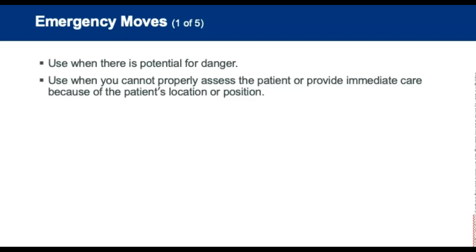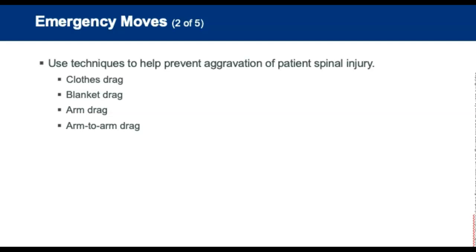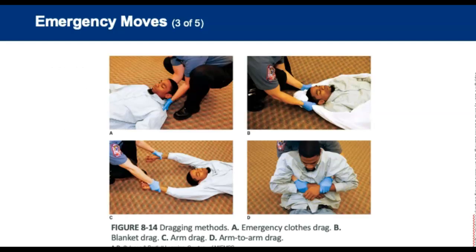Emergency moves are used when there is a potential for danger before assessment and care can be provided, or when you cannot properly assess or provide immediate care because of the patient's position. To prevent aggravation of a spinal cord injury, techniques include the clothes drag — pulling on the patient's clothing in the neck and shoulder area — the blanket drag, placing the patient on a blanket or coat to be pulled, the arm drag — rotating the arms above the head and grasping the wrist — and the arm-to-arm drag, placing arms under the patient's shoulders and through the armpits while grasping the opposite wrist and dragging backwards.